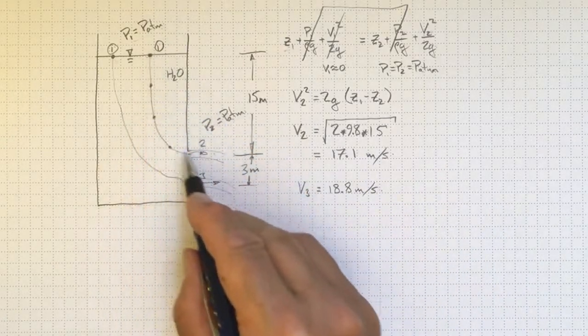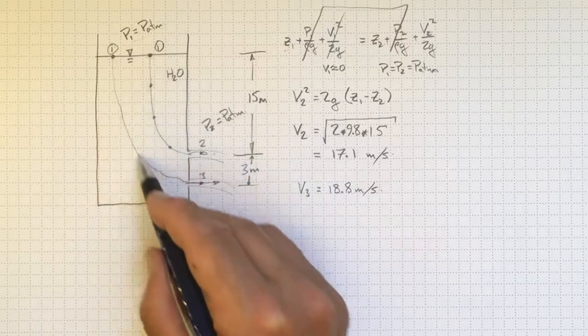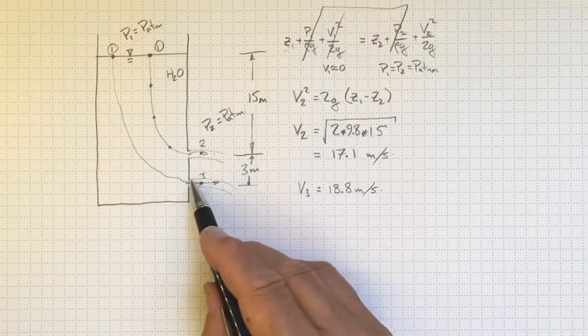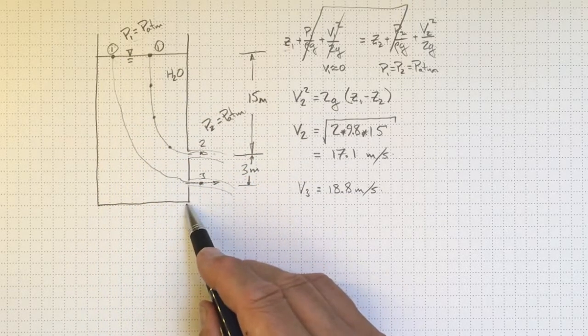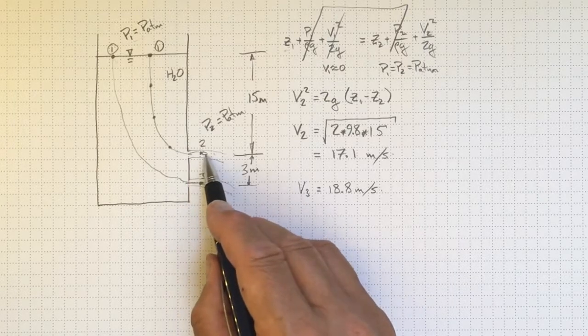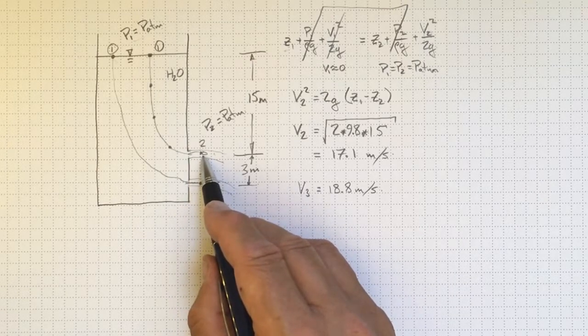We can write Bernoulli's equation along this streamline. Having an additional hole in the tank wall here isn't going to change what happens at location two at all.